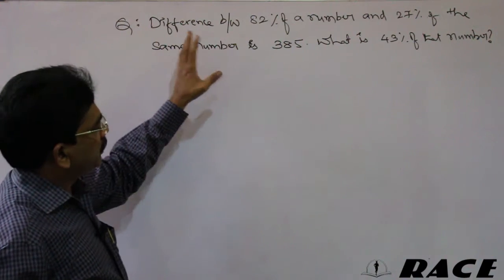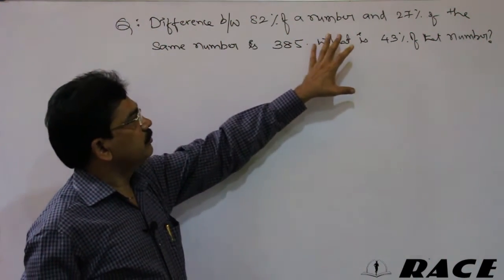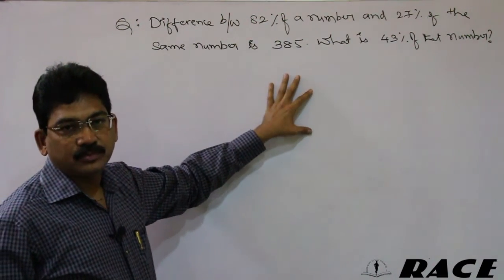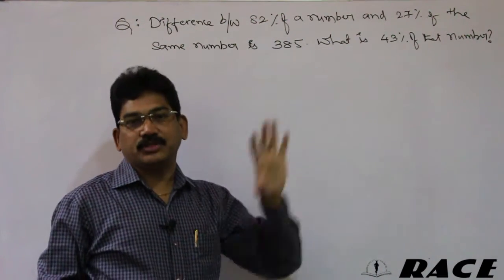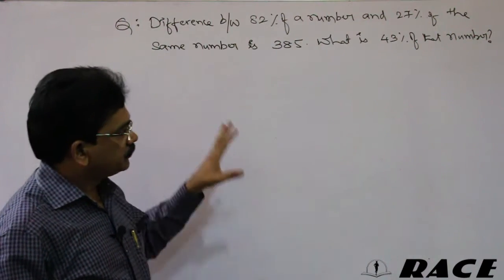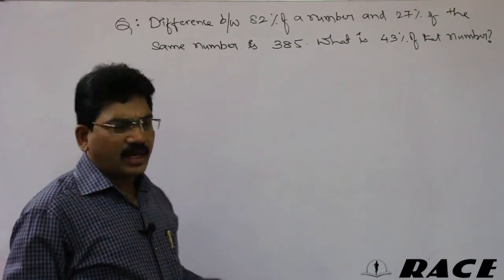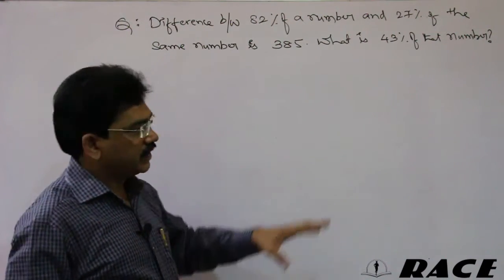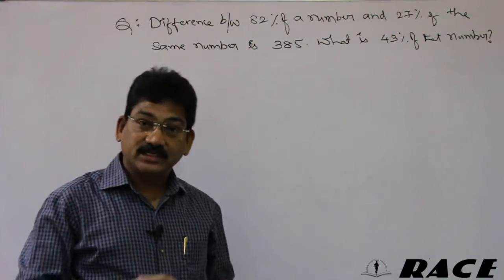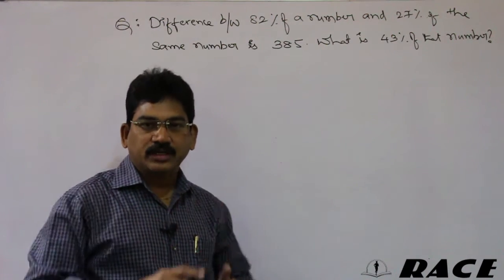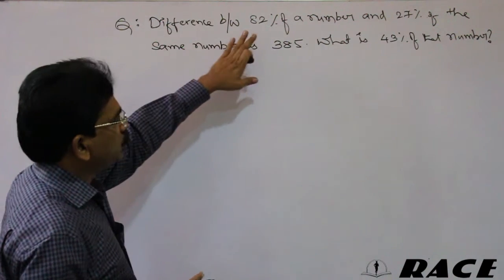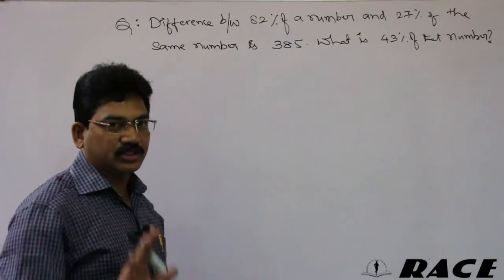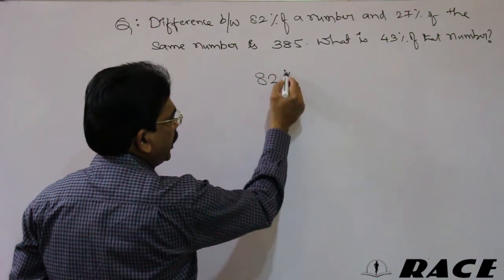The question: the difference between 82 percent of a number and 27 percent of a number is 385. What is 43 percent of that number? The difference between 82 percent and 27 percent is 55 percent.